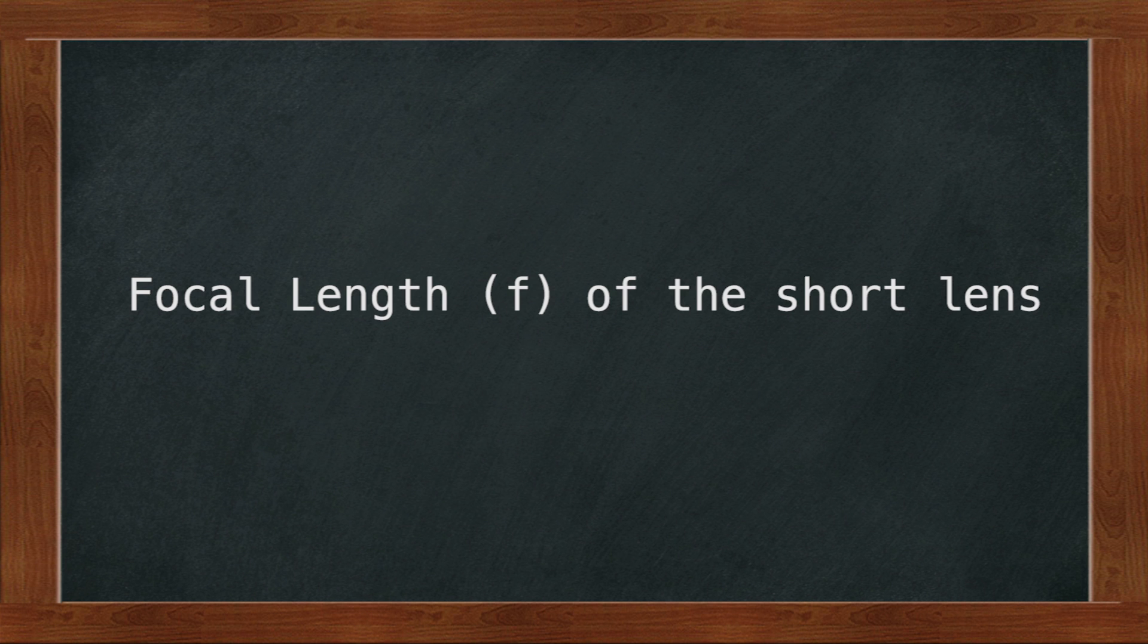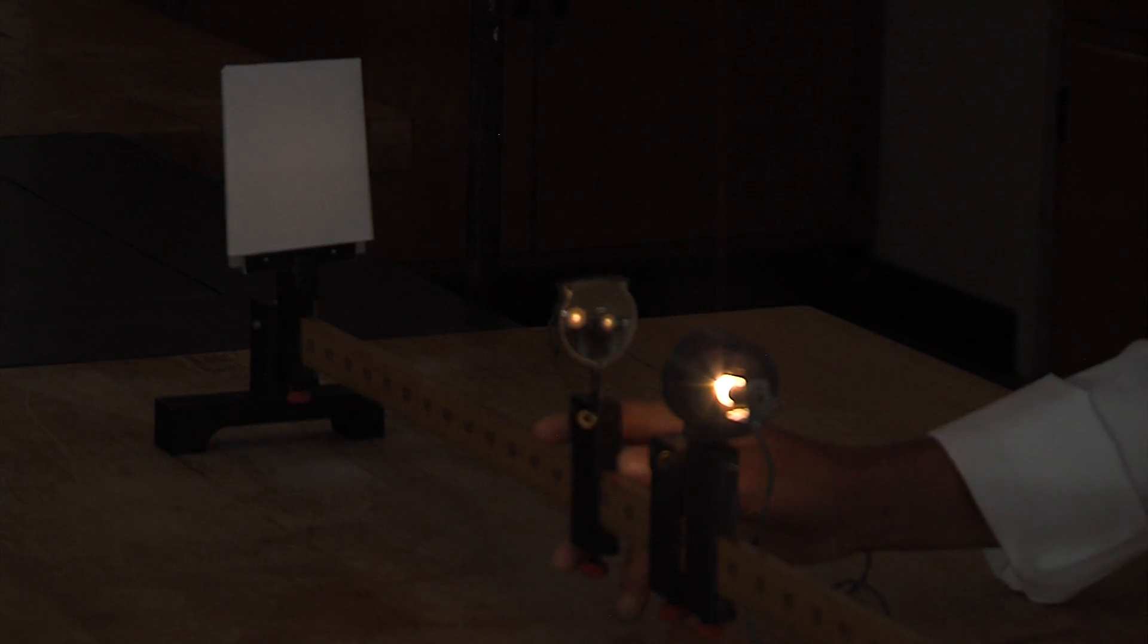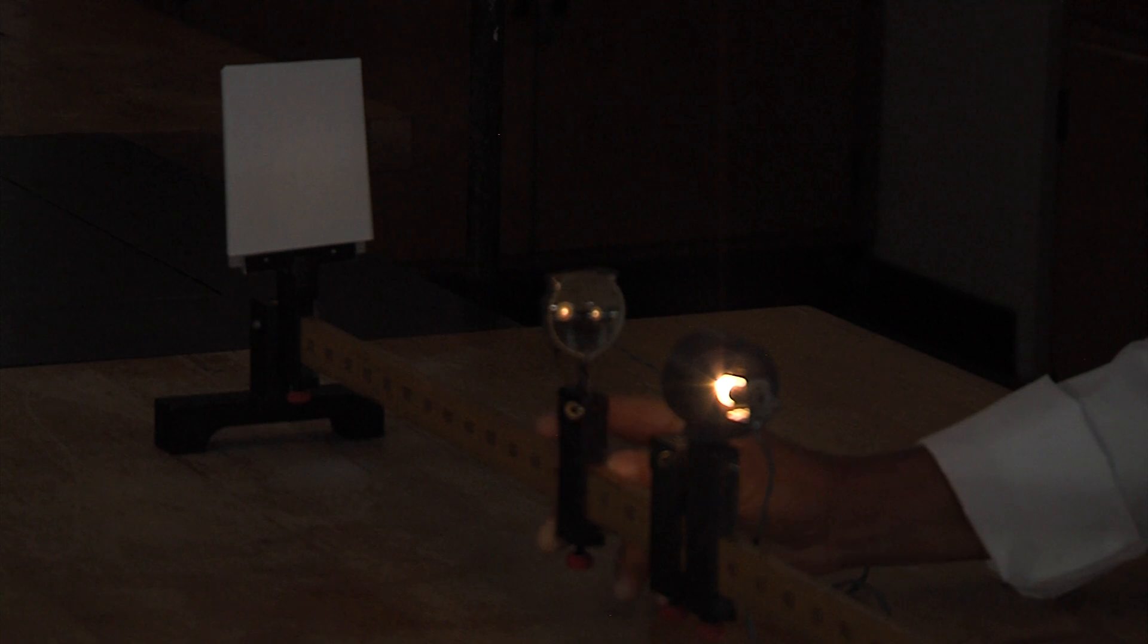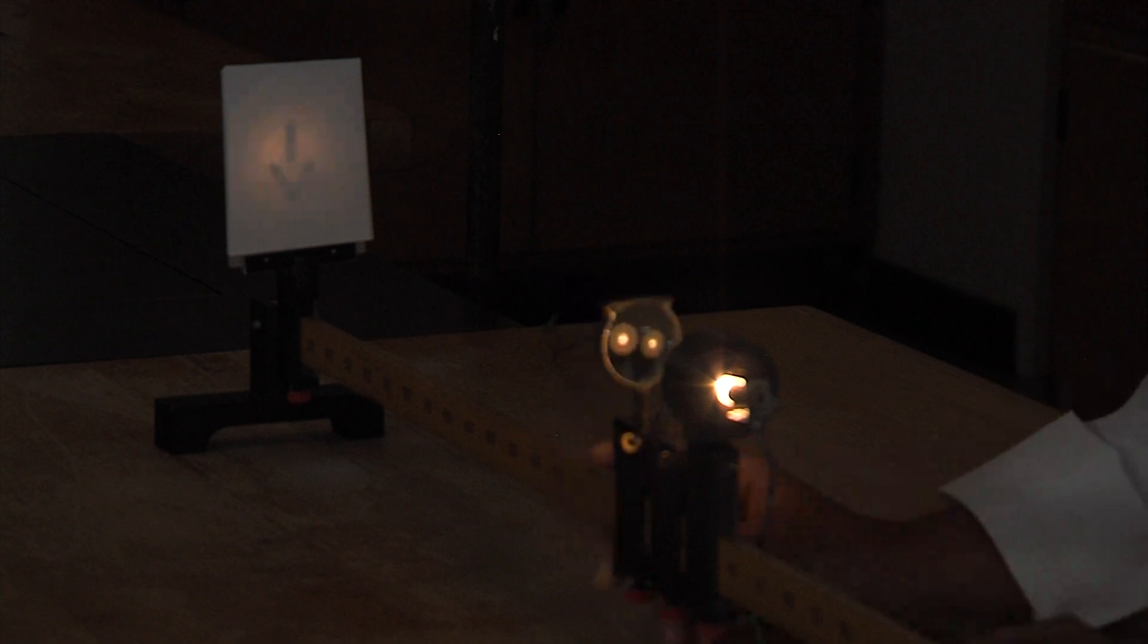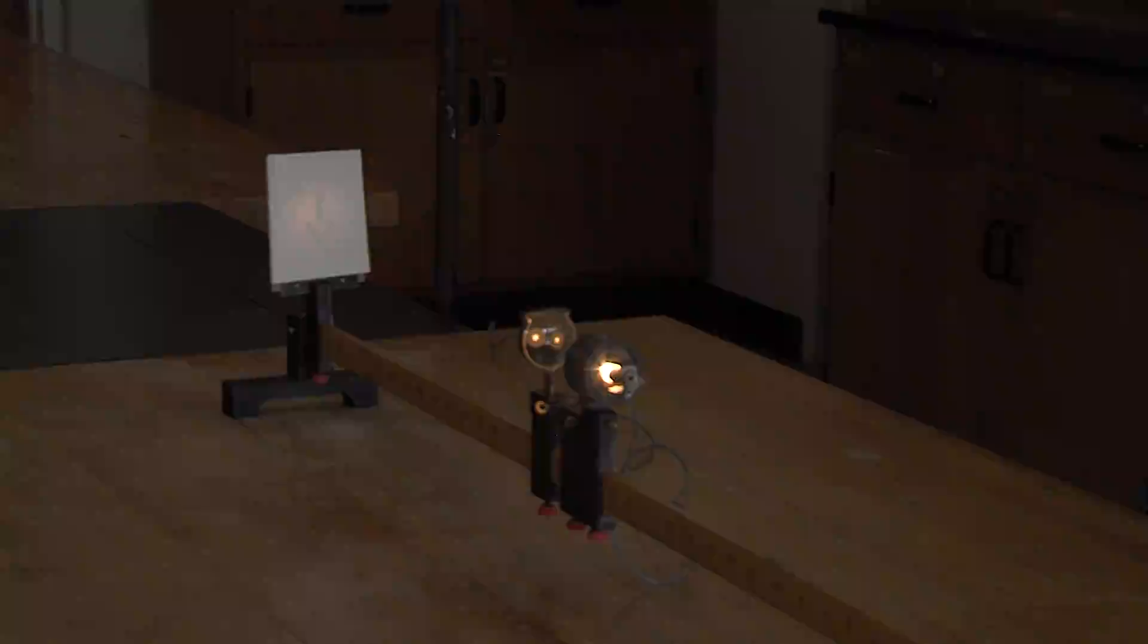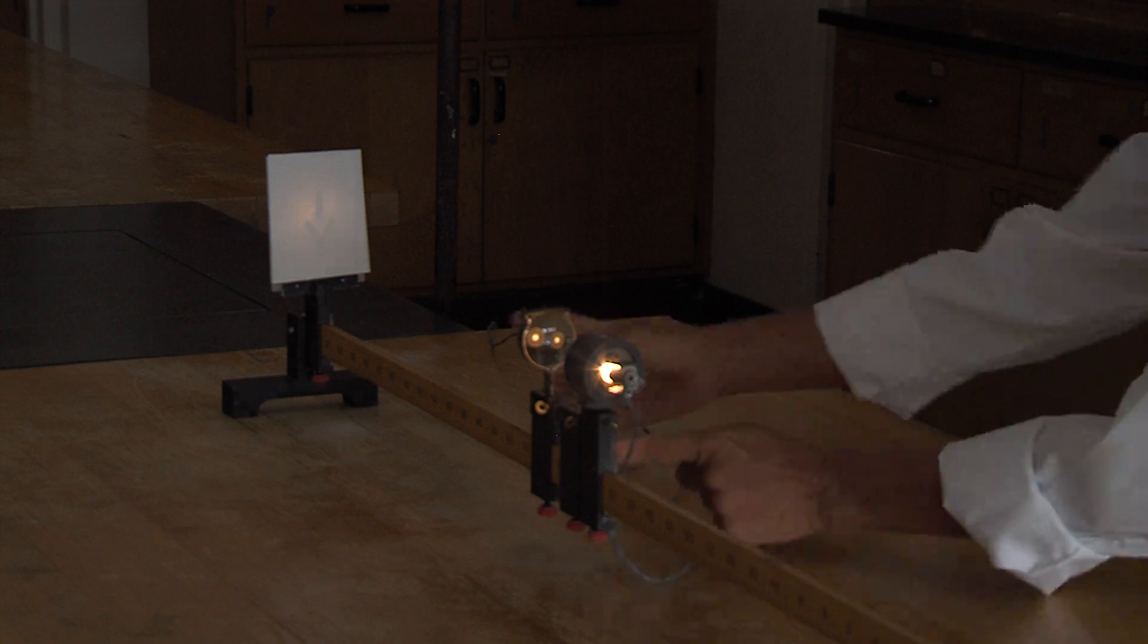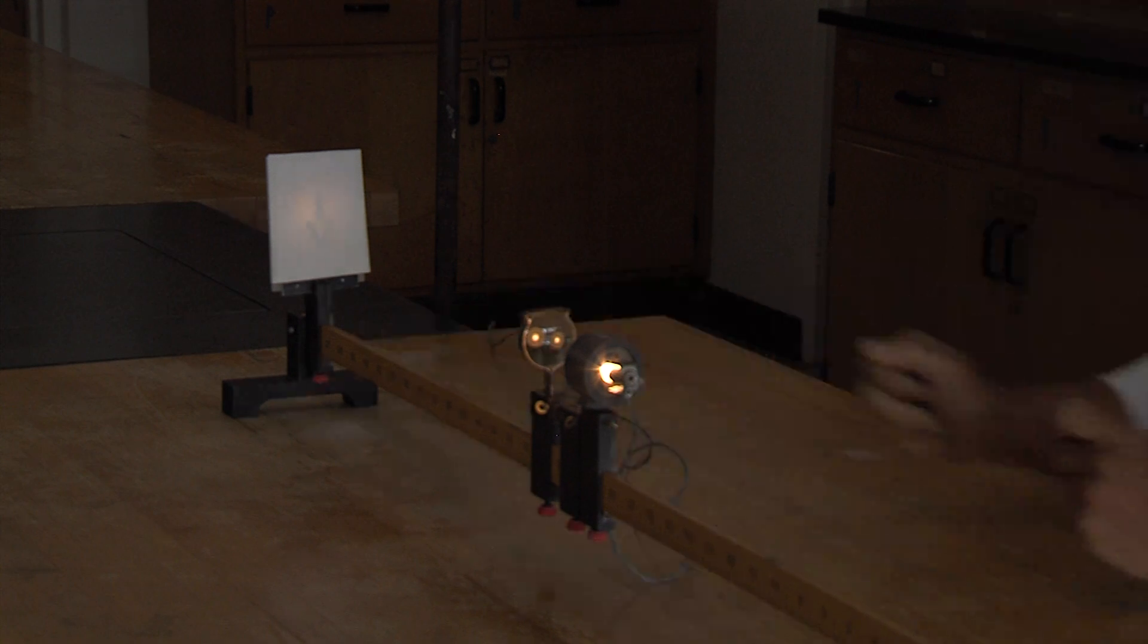To calculate the focal length of the short lens, you will use a lamp with an image of an arrow as the object. You will adjust the position of the short lens and the screen until you have achieved the sharpest possible image of the arrow on the screen. Note that the image of the arrow will be inverted. Now measure the object length and the image length and use the lens equation to determine the actual focal length of the short lens.